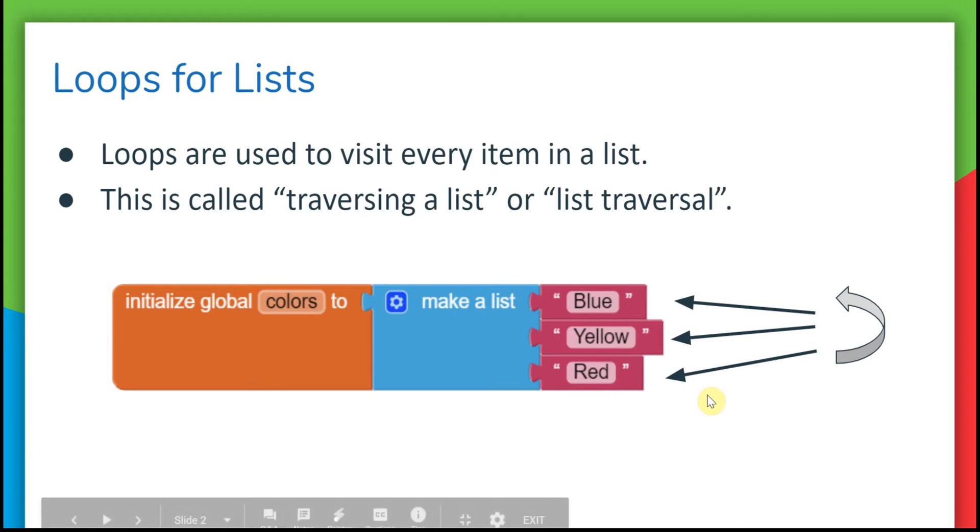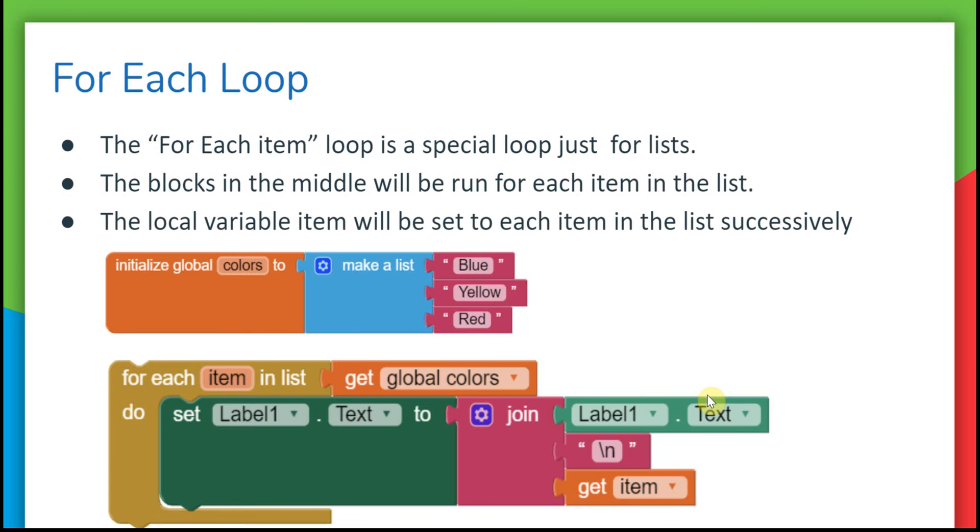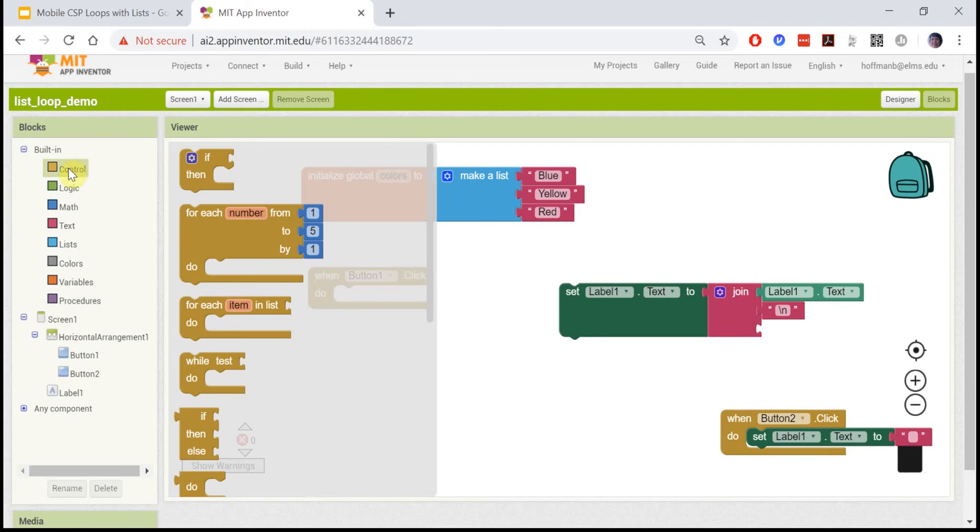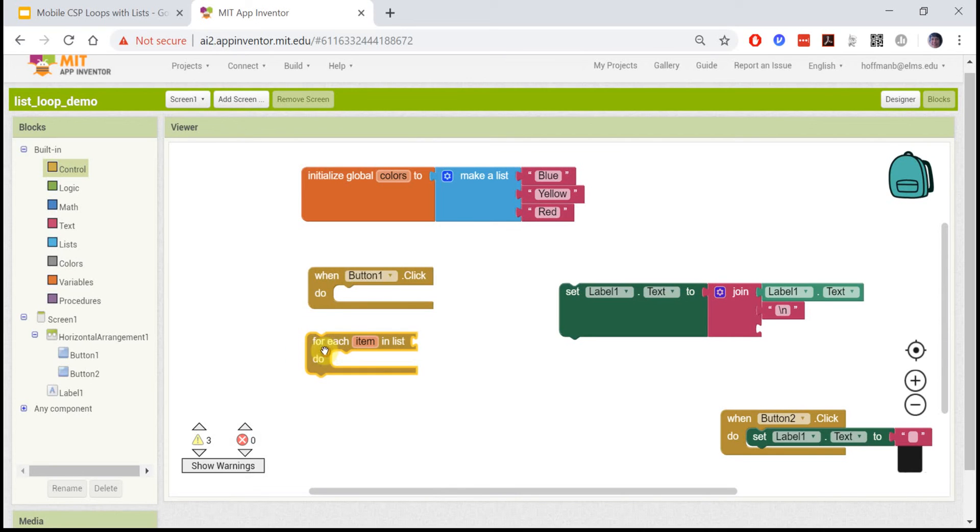Here we have a list of colors and we can visit each item - blue, yellow, red - in order. The simplest way to do this is with the for-each item in list loop. If we look in the control drawer after the selection statement, we see three different kinds of loops. We've already used the counter control for-each number loop, but the next one is for each item in list.